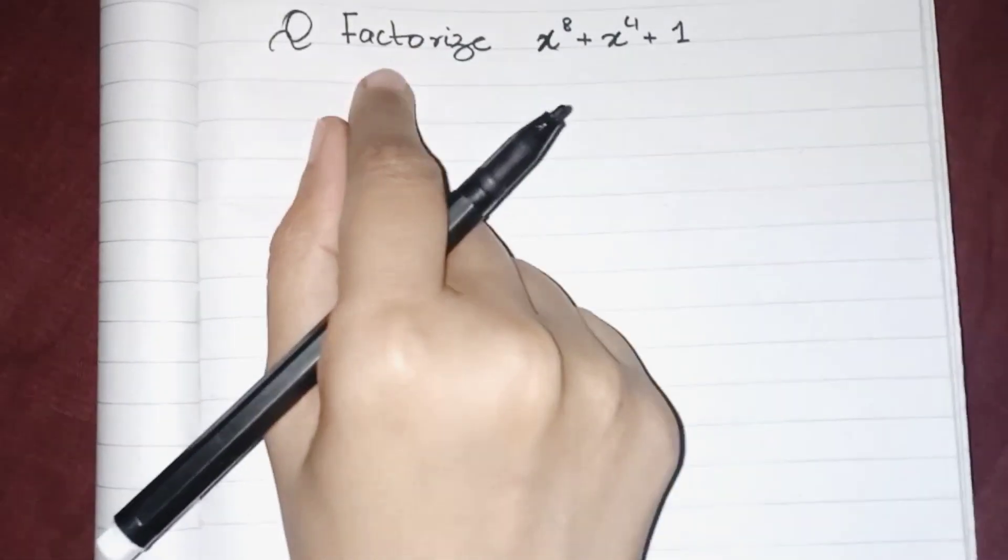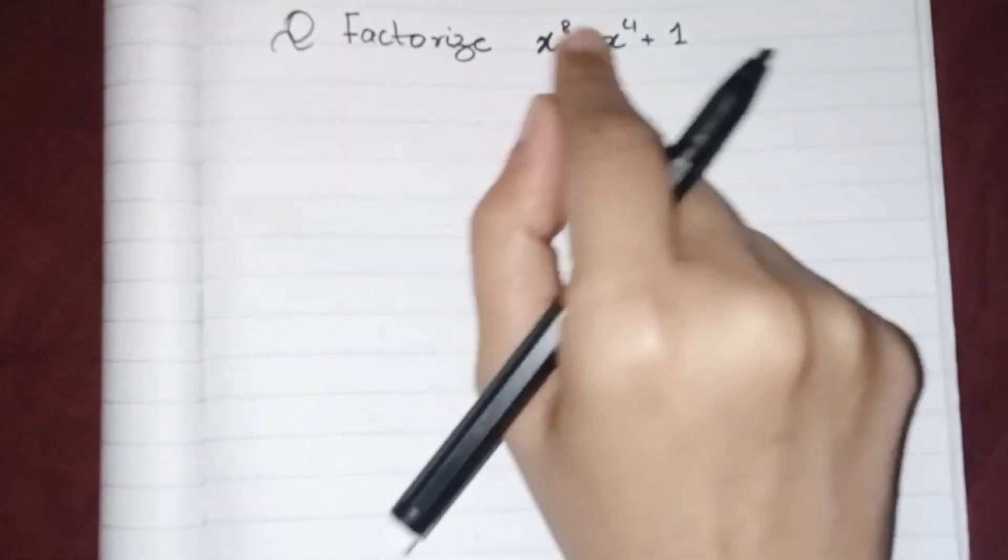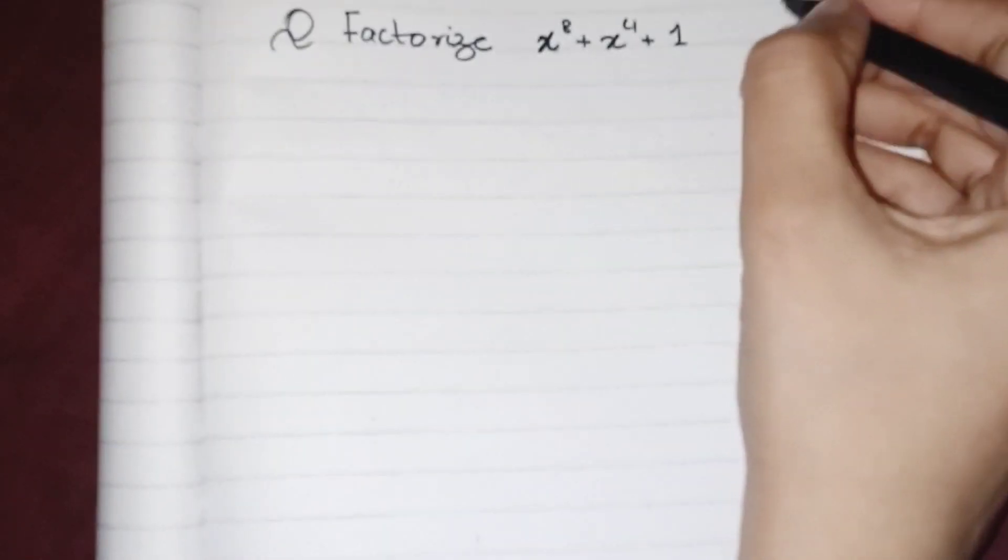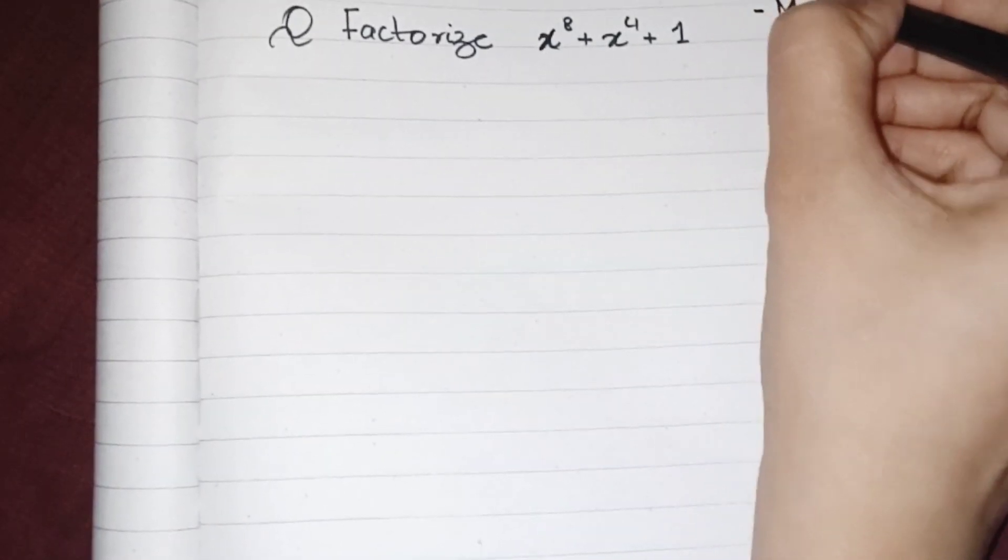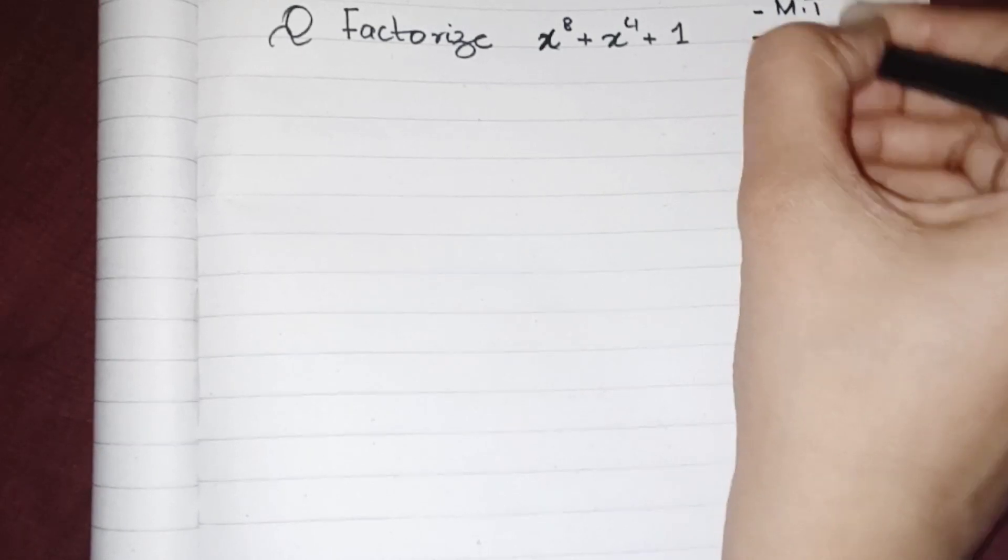Hello everyone, today we have to factorize this amazing expression. In this expression we have three terms, so we have two methods: number one is middle term and number two is perfect square.